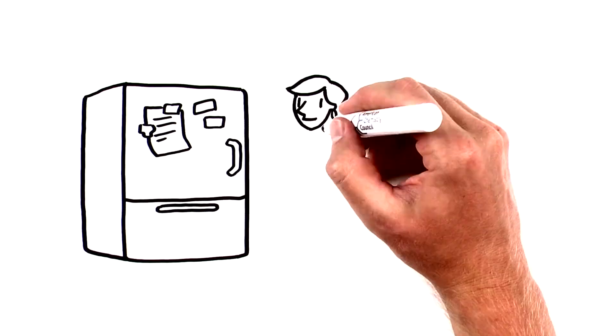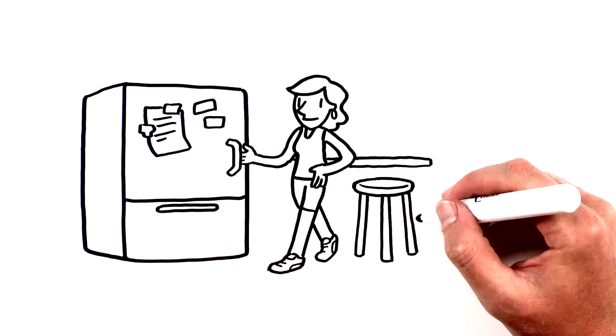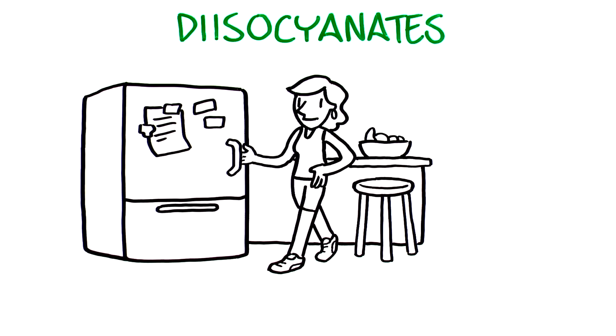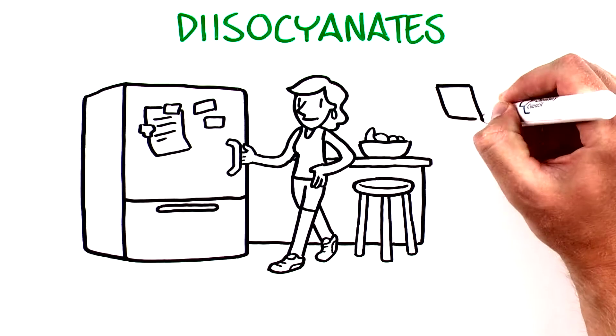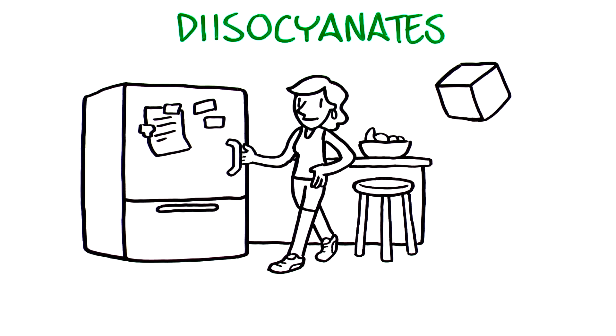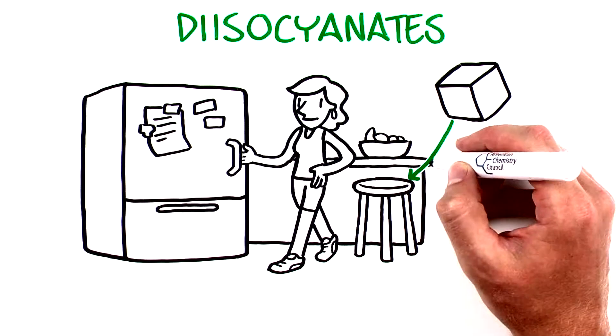Did you know that today you use a lot of products made better with diisocyanates? Diisocyanates are a family of chemical building blocks used to make polyurethanes for furniture,